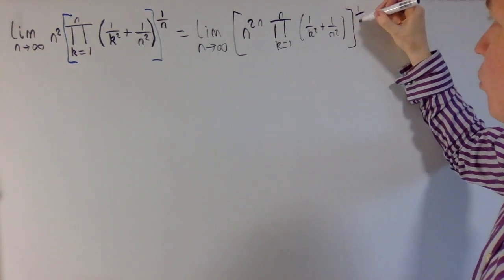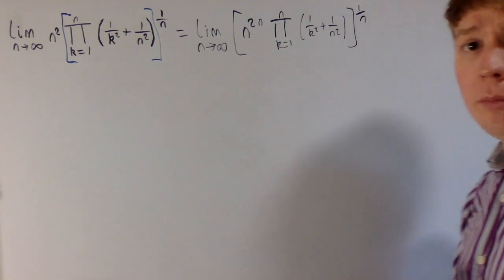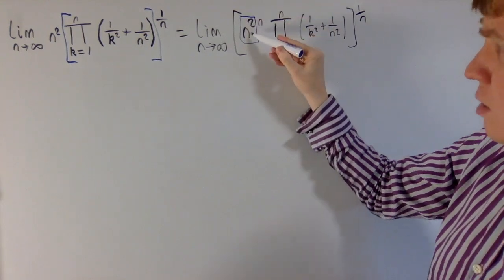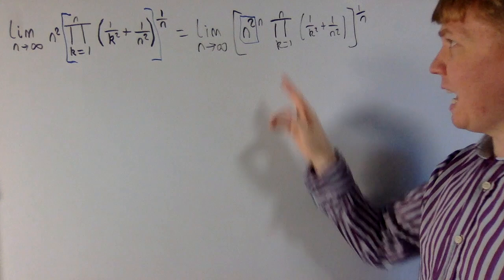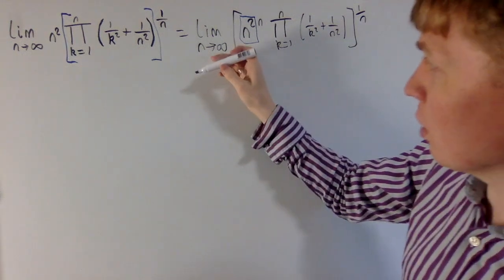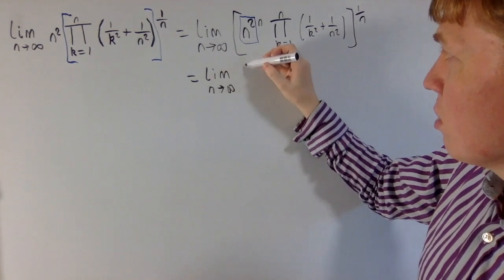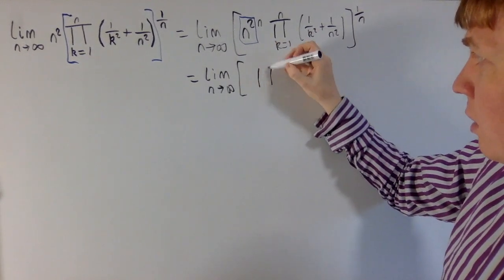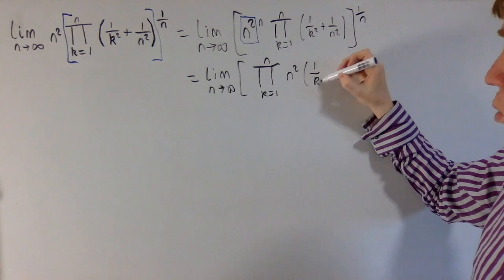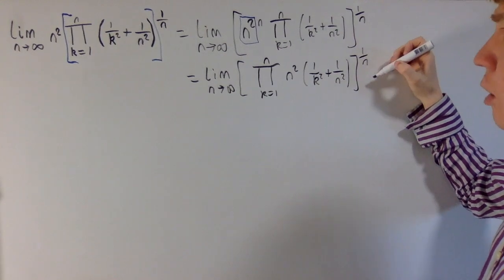All raised to the power of 1 over n. Now we'll try and take the n to the 2n inside this bracket. Here we've got actually n different terms, so you've got to realise that n to the power of 2n is actually n squared to the power of n, and we've got n lots of n squared, so each of these n squareds goes with one of the terms in the product. That means we're allowed to take one n squared into each term in the product.